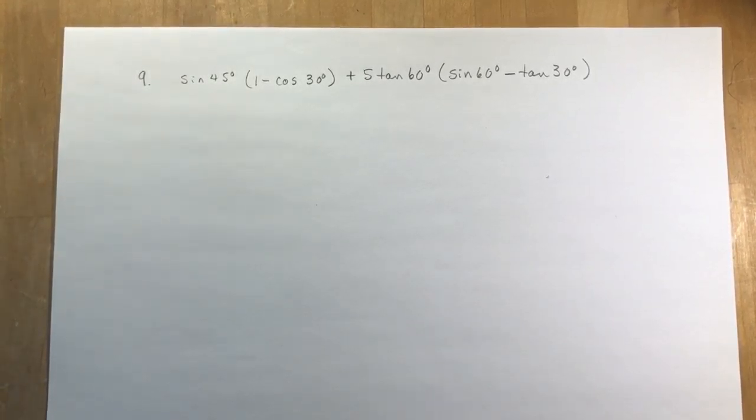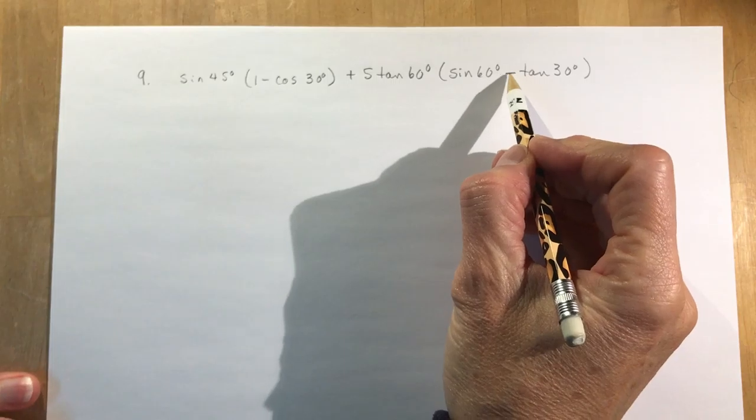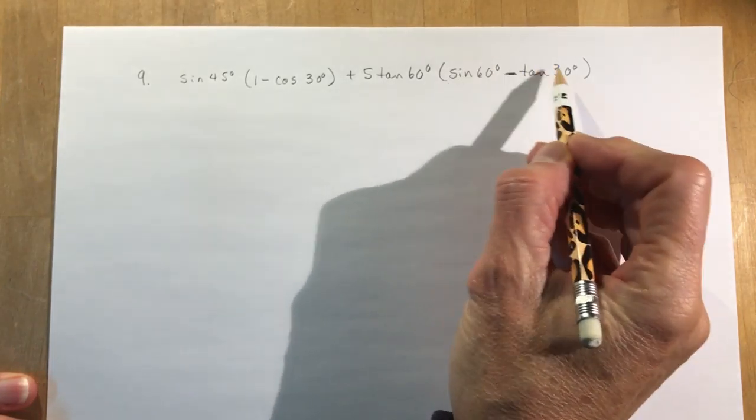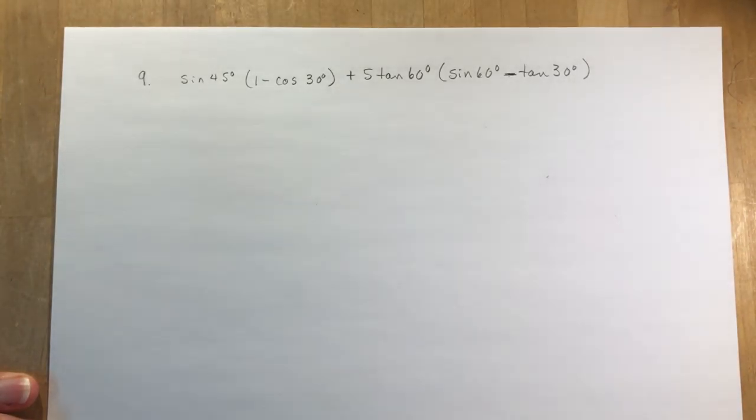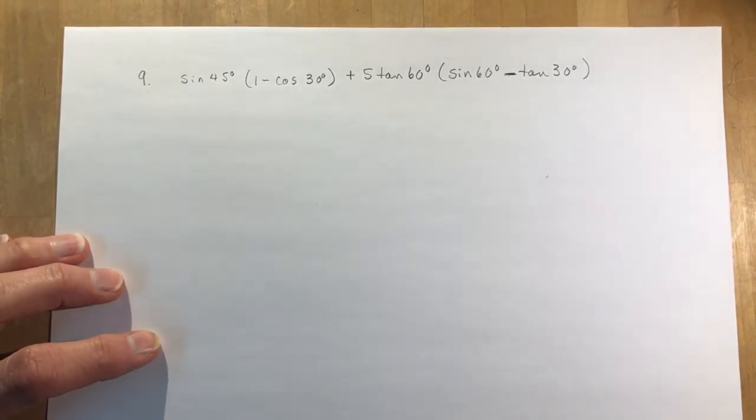So this quick little video is going to redo question 9 from your Chapter 5 unit test that I gave you the sample for. And for some reason, when I got to this part, I multiplied these together rather than subtracting them. So I'm going to do it again, just to make sure that you're not terribly confused by it all.